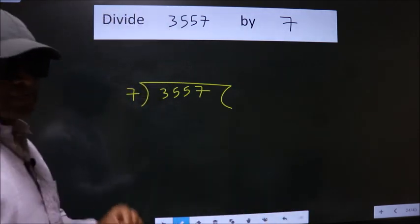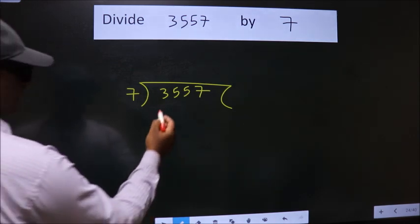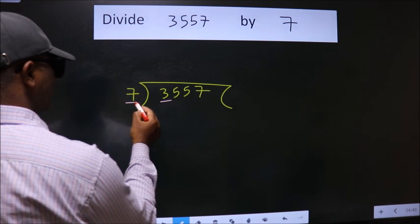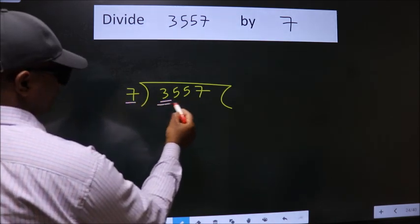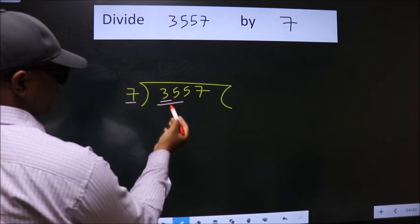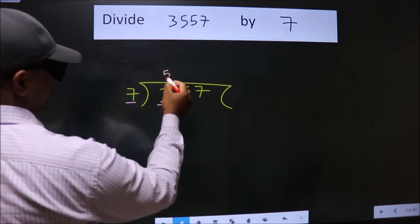This is your step 1. Next, here we have 3. Here 7. 3 is smaller than 7. So, we should take 2 numbers, 35. When do we get 35 in 7 table? 7 fives 35.